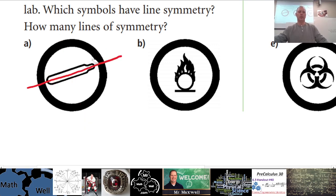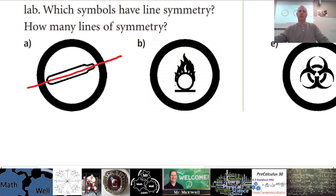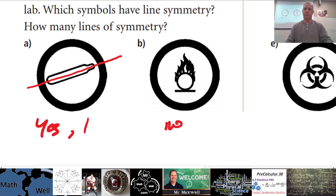What about symbol B? It's close — from about the middle down it looks pretty good, but then these flames: this line would go right up between the flames, and this part does not have a matching partner on the other side. So they are not exactly symmetrical — this one would be no.